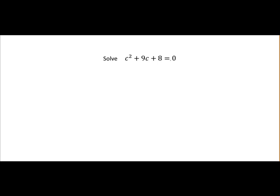So c squared plus 9c plus 8. We will start by getting the guide number. That's the c squared coefficient which is 1 and the constant 8. So 1 times 8 is equal to 8.